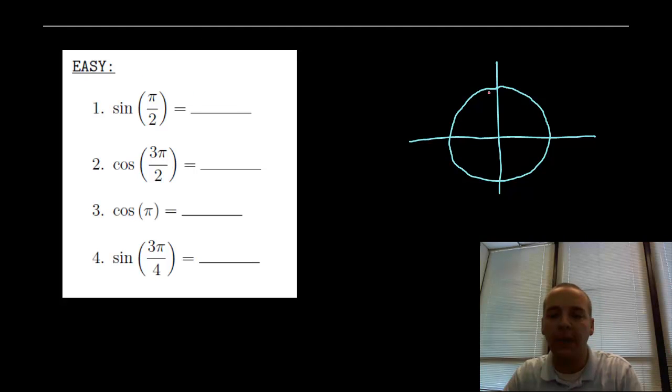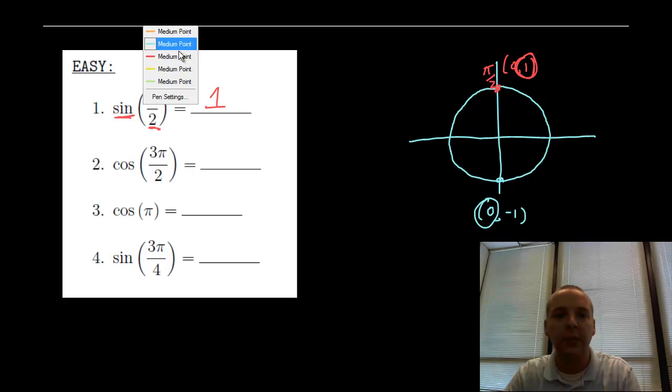Sine of pi over 2. On the unit circle, all the way around is 2pi, so halfway around is pi, and 90 degrees would be pi over 2. Here's pi over 2, the point 0,1, and sine of pi over 2 is the Y coordinate of 1. Cosine of 3pi over 2 is right here, 0 comma negative 1. They want the X value, that's 0. Cosine of pi - here's pi back here and the X coordinate, the cosine, would be negative 1. The X coordinate is at negative 1, the Y value is 0.